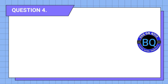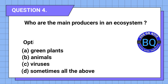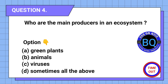Question 4. Who are the main producers in an ecosystem? Your options are here. The correct answer is option A.